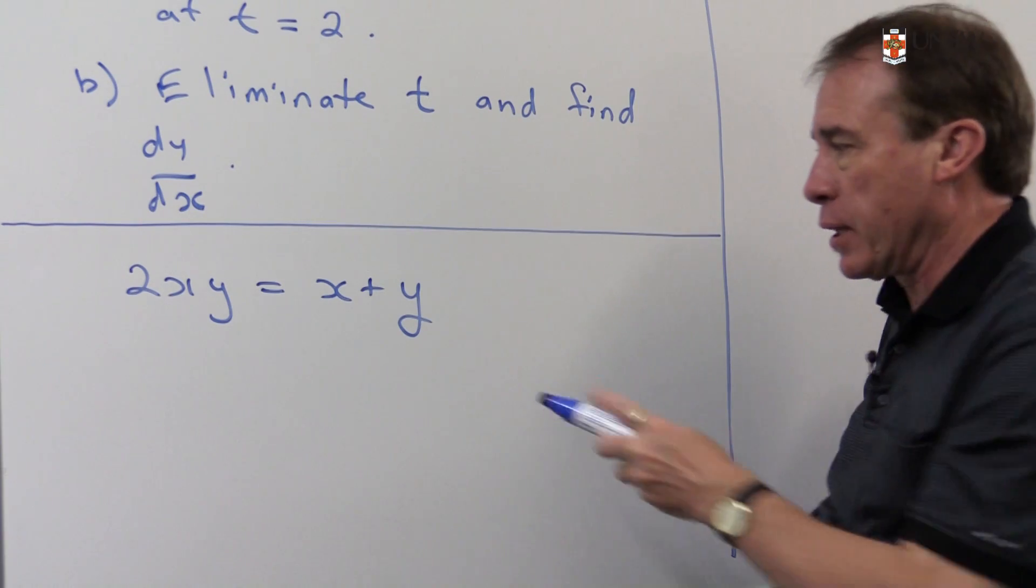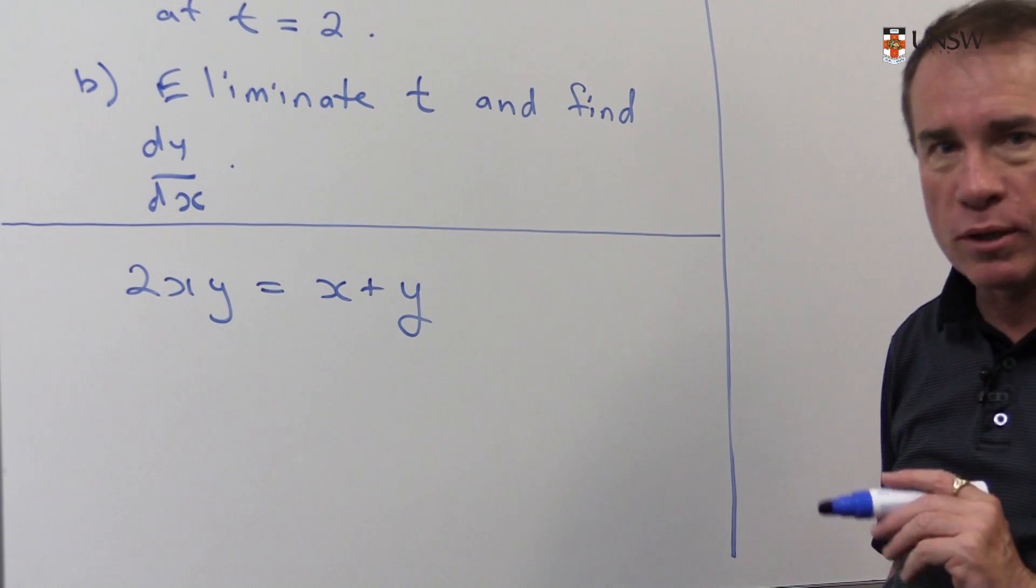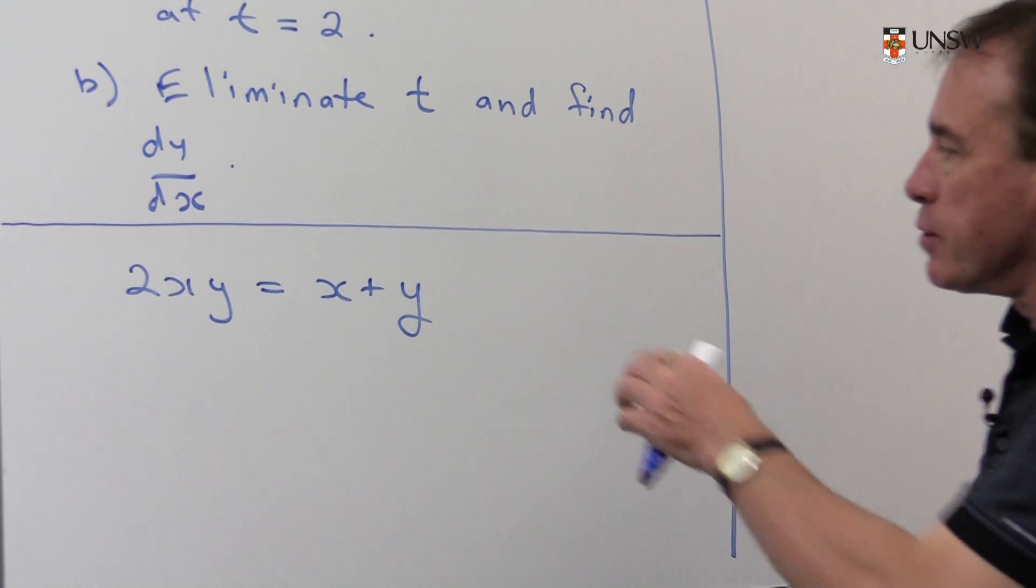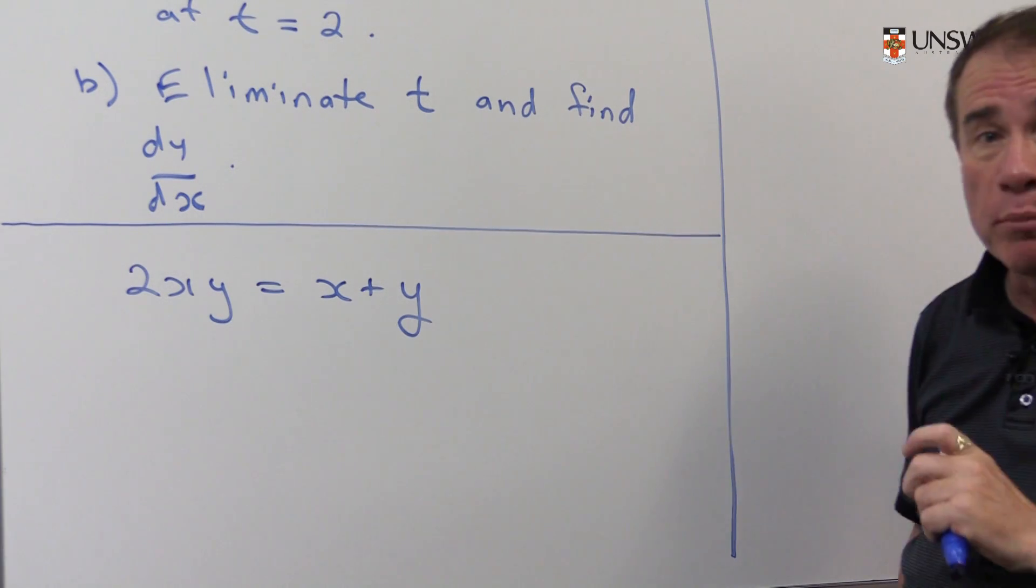And again, it's not clear at all what this looks like geometrically. So Maple would be the way to go to see what it looks like. What I want to do now is find the derivative, find dy/dx from this using implicit differentiation. So it's good revision of our implicit differentiation.